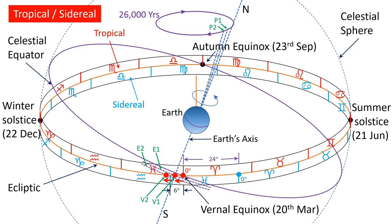Since the vernal equinox moves westward every year, there is a new vernal equinox point position every year, and hence a new starting point of the Sayana or tropical zodiac every year. This results in shifting of the Sayana signs, and hence it is called the moving zodiac. So every year, the starting point of the tropical zodiac moves westward longitudinally by about 51 seconds of arc from the starting point of the sidereal zodiac. Apparently in the past, the starting points of the two zodiacs coincided, but as the vernal equinox point precesses westward at the rate of about 51 seconds per year with respect to the fixed stars, the starting points of these two zodiacs have drifted away from each other over the years.